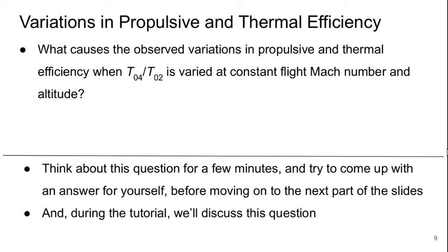Welcome to Part 2 of Lecture 21 of Aerospace Propulsion. We left off with this question about why we see these changes in propulsive and thermal efficiency as T0.4 over T0.2 is varied.